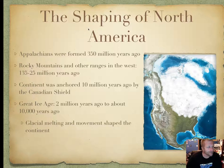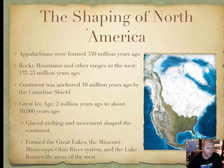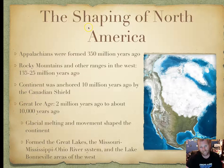The glacial melting and movement shaped the continent, leaving the Great Lakes there, a substantial amount of freshwater lakes in Canada, and shaping the overall geography of central North America. It formed the Great Lakes, the Missouri, Mississippi, and Ohio River System, and Lake Bonneville areas to the west.